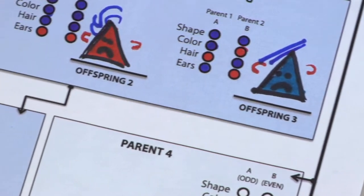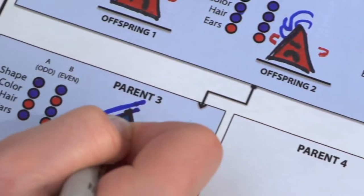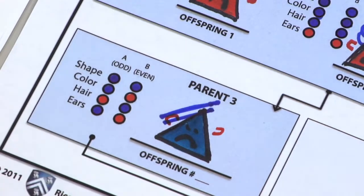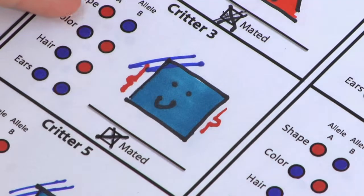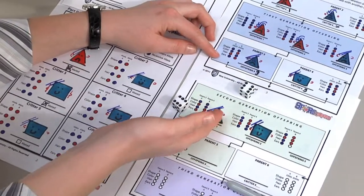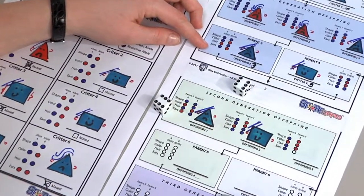Once complete, select one of the offspring from the first generation and transfer its traits to the parent 3 box. For parent 4, select an unmated critter from the original six. As before, roll the dice to create the second generation.